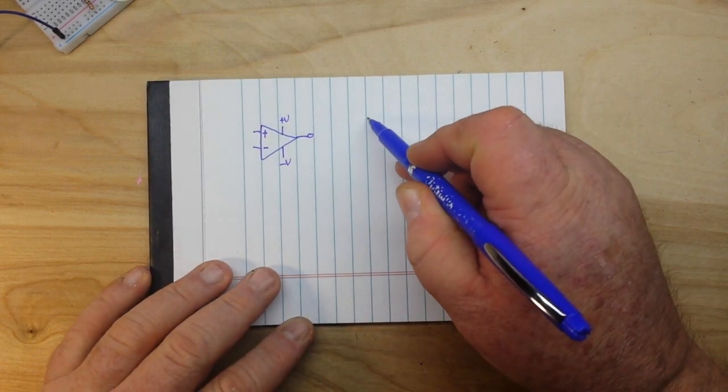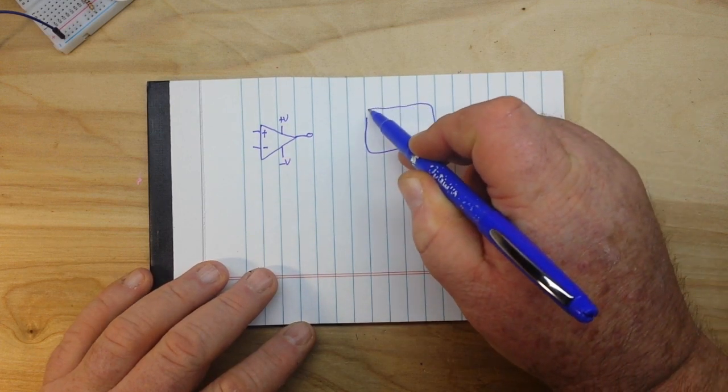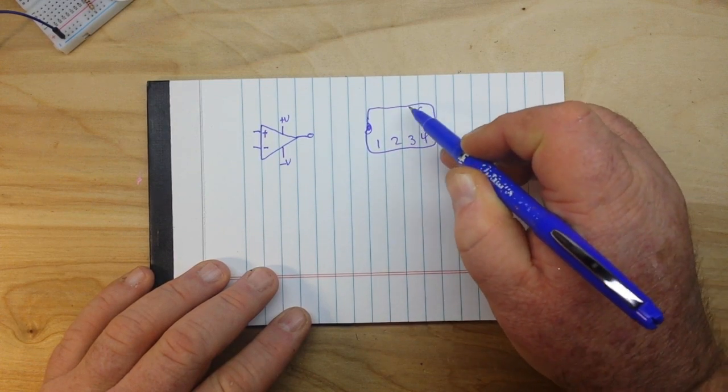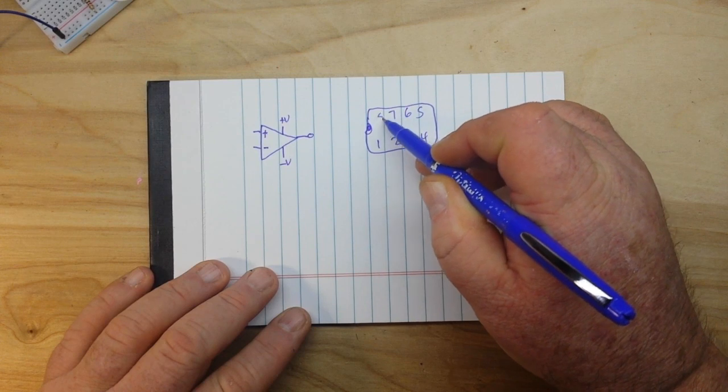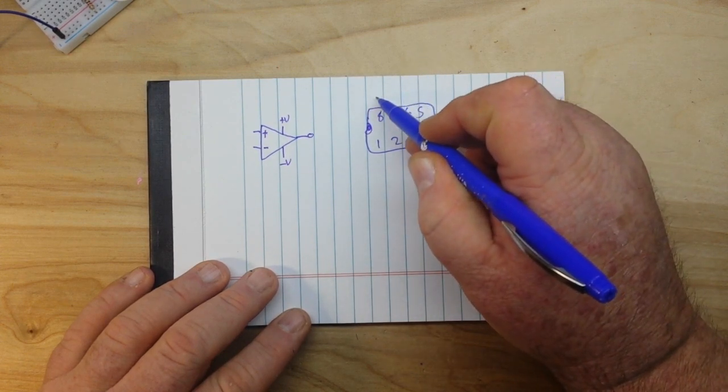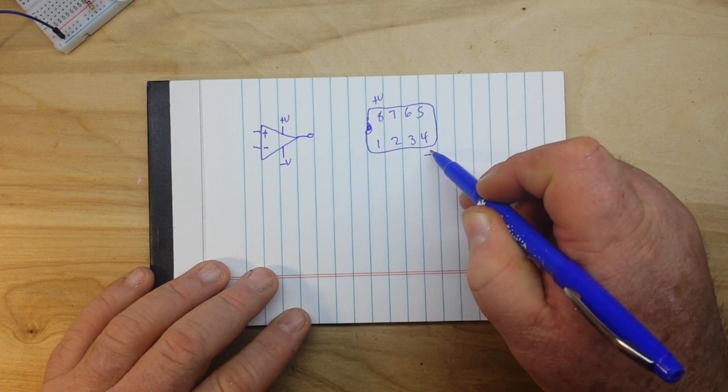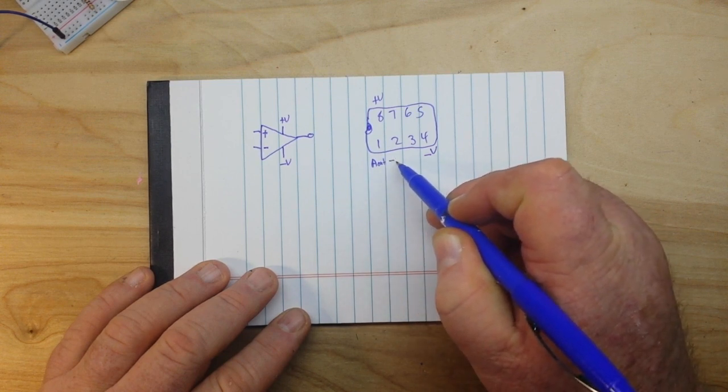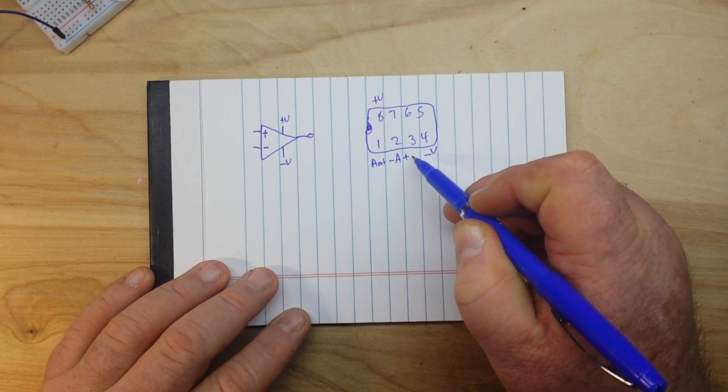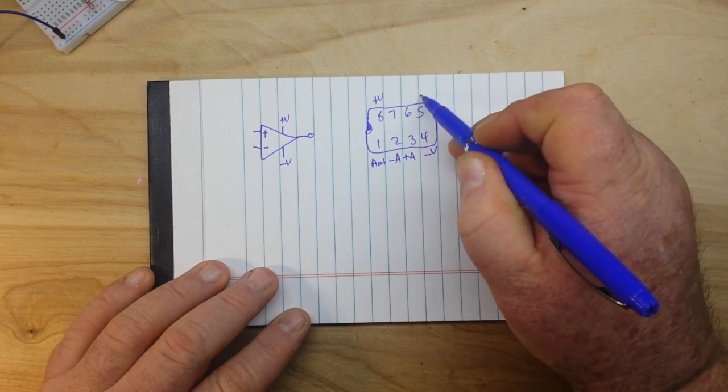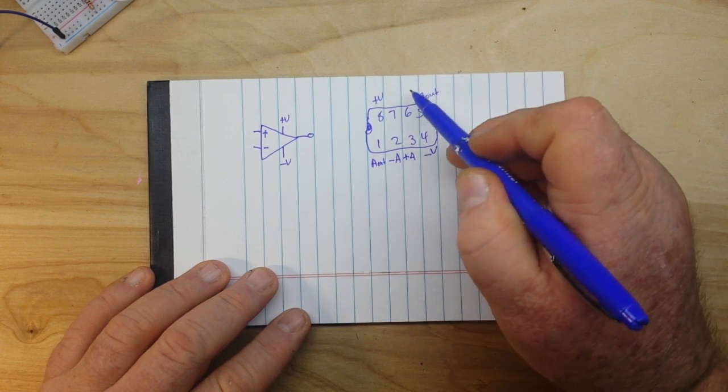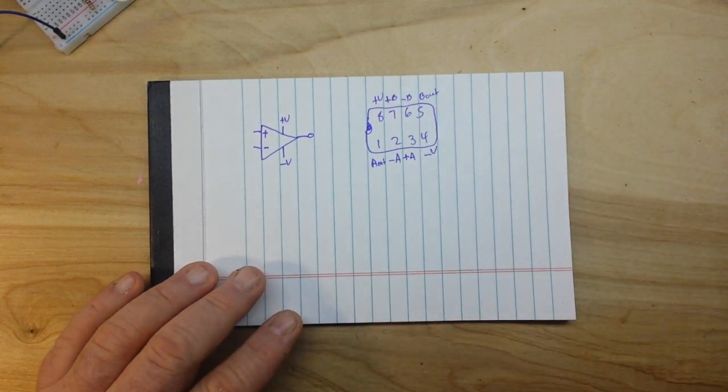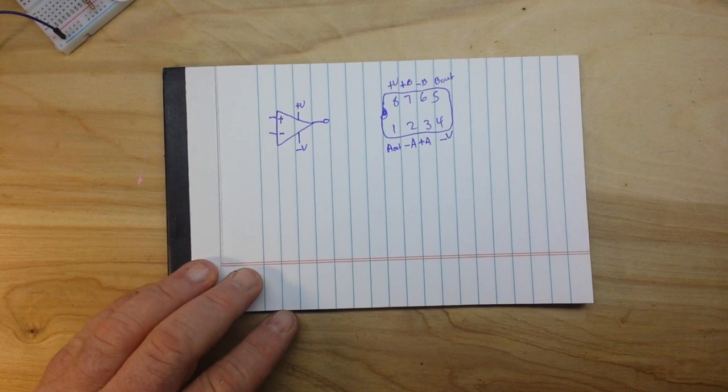The op-amp we're going to use today is the TL072, which is a quad op-amp package. Let's go over the pinout here real quick. Pin 8 is our plus V, pin 4 is our minus V, pin 1 is A output, pin 2 is our inverting A, pin 3 is our non-inverting A, pin 5 is B out, pin 6 is inverting B, and pin 7 is non-inverting B. We're not going to use B, we're just going to use the A.